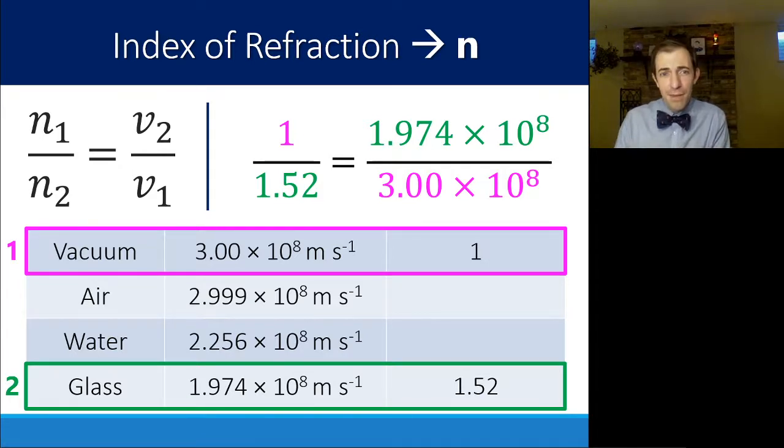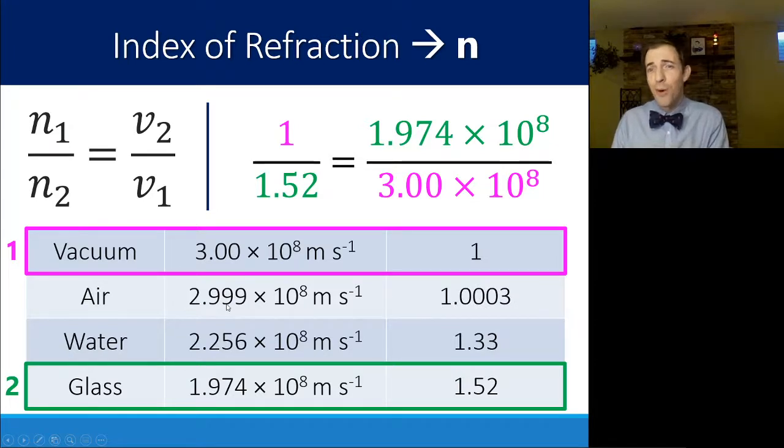If I do the same thing for water, which doesn't move quite as slowly as glass, we get an index of refraction somewhere in between, 1.33. And air, because it moves so close to the same speed as in a vacuum, we get like 1.0003. That's close enough to 1 for us. So we are just going to say that in air, the index of refraction is 1. That's plenty of precision for what we need.